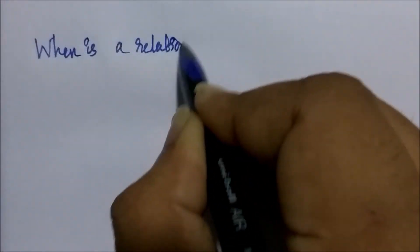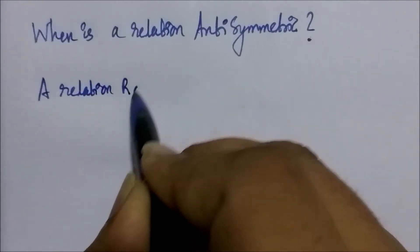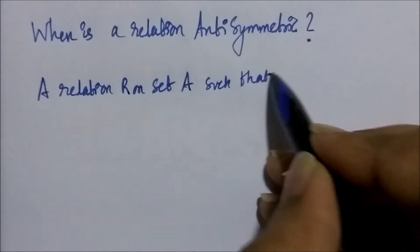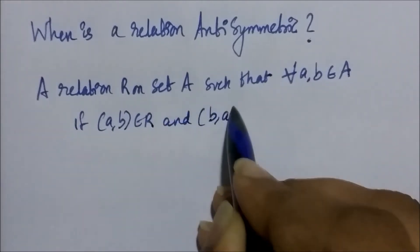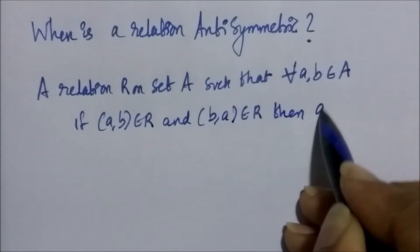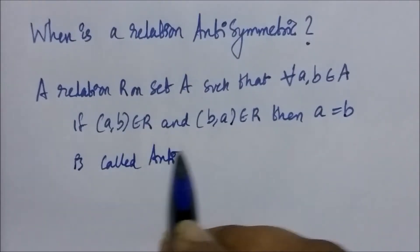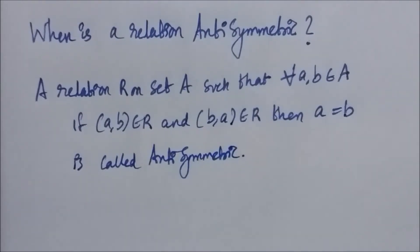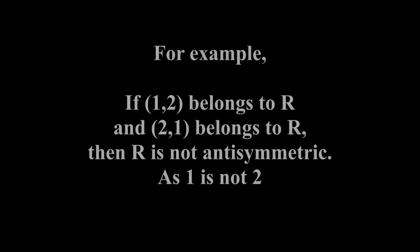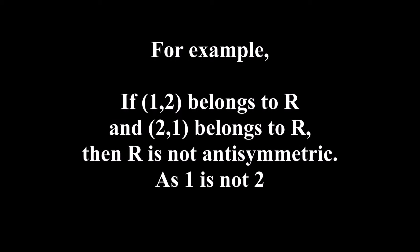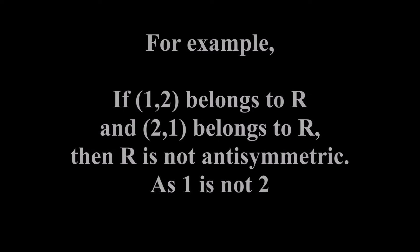When is a relation antisymmetric? A relation R on set A is antisymmetric if for all A, B belonging to set A: if (A,B) is in the relation and (B,A) is in the relation, then A equals B. For example, if (1,2) and (2,1) are both in a relation, then that relation is not antisymmetric because 1 is not equal to 2.